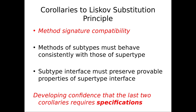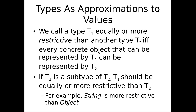First, method signature compatibility — you have to have signatures for the methods that correspond from supertype to subtype. Second, the methods of the subtypes must behave appropriately. Third, subtypes have to preserve provable properties of the supertype. The second one involves preconditions and postconditions.